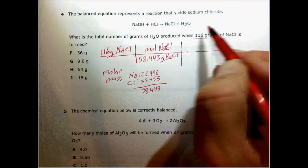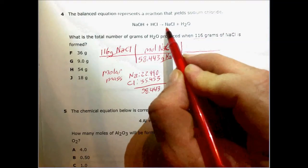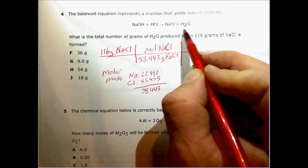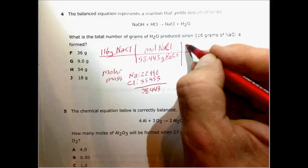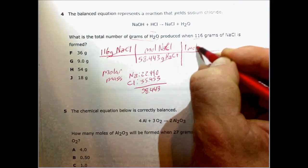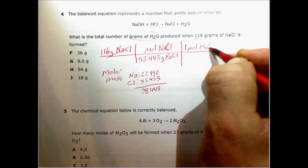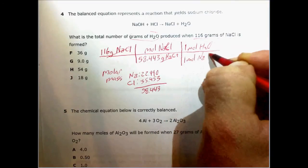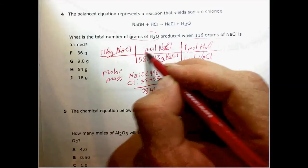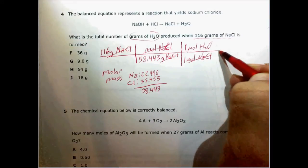Now I need my mole ratio. And I see that up here, there's one mole of NaCl for every one mole of water. And the question asked me about grams of water. So I'm going to put water on top, one mole of H2O for every one mole of NaCl. Now I've gotten rid of NaCl, and I'm strictly in terms of water.